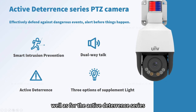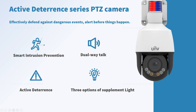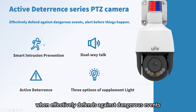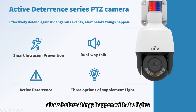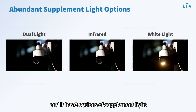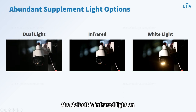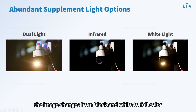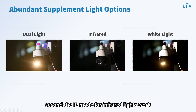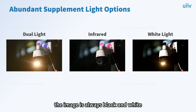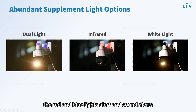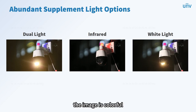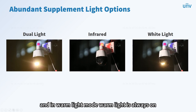The active deterrence model with sound and light alert features smart intrusion prevention, dual-way talk, active deterrence, red-blue lights, and supplement lights. It has three light modes: First, dual-light mode — default is infrared light on; when an event triggers, warm light, red and blue lights turn on with sound alert, the image changes from black and white to full color, then restores to infrared mode. Second, IR mode — infrared lights work and the image is always black and white; when an event triggers, red and blue lights and sound alert, while warm light stays off. Third, warm light mode — two warm lights work and the image is colorful; red and blue lights and sound alert when an event triggers, and warm light is always on.